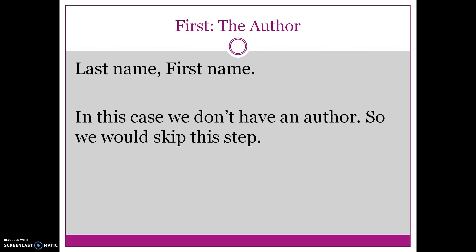First in the citation comes the author. The author's last name goes first, followed by a comma, and then the first name of the author, period. In this case, we don't have an author, so we would skip this step.